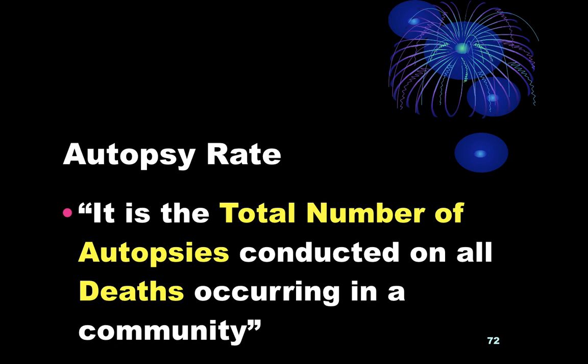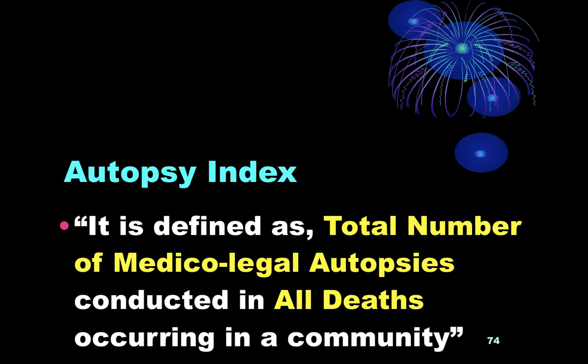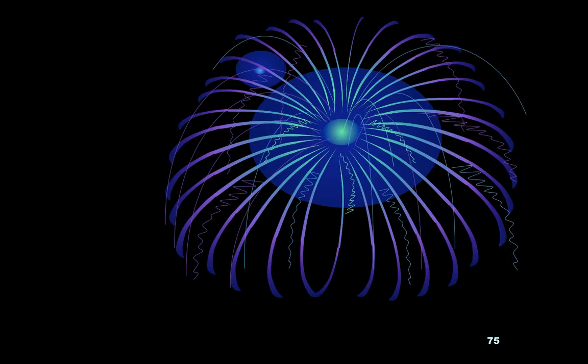Autopsy rate is the number of autopsies conducted on all deaths occurring in a community — the total number of all types of autopsies including medical, medical-legal, psychological, and others on all deaths. Whereas the autopsy index is the total number of medical-legal autopsies conducted on all deaths occurring in a community.